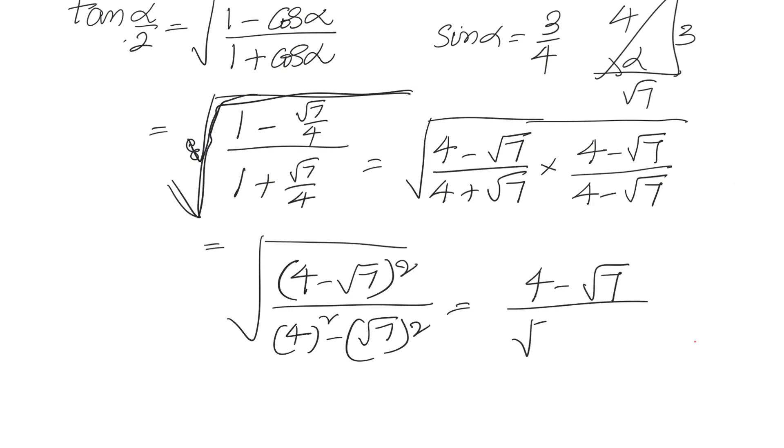That equals four minus root seven divided by three. Therefore, tan of one-half sin inverse of three-fourths equals four minus root seven divided by three.